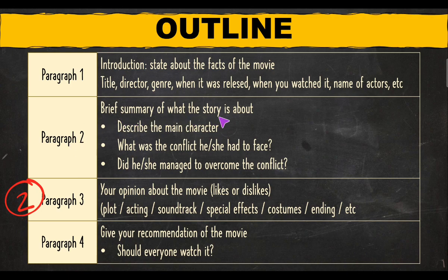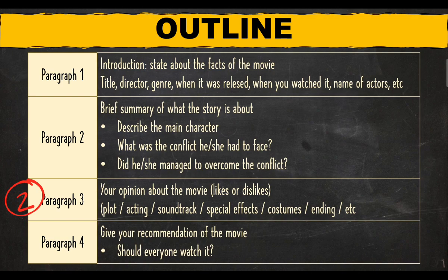Paragraph two is a brief summary of what the story is about. Summary ni yang kadang-kadang bermasalah because bila nak tulis summary, some students tend to write everything about the movie. When you write a review, do not write too long. Orang cuma nak tahu tiga benda je: the main character, apakah konflik yang dihadapi, dan apa yang dia buat untuk overcome the konflik. Those are the basic things you have to include to write a summary of the story.